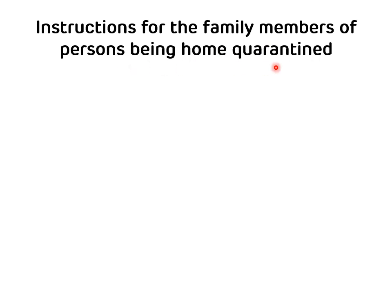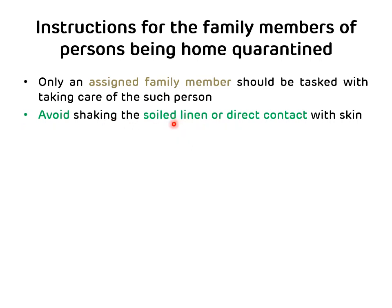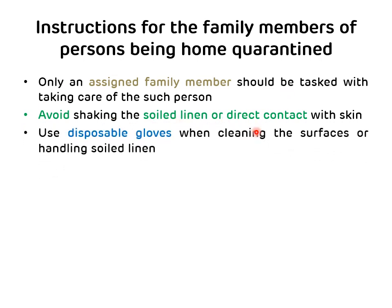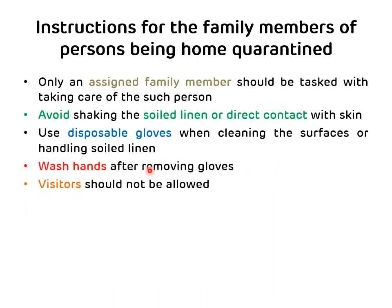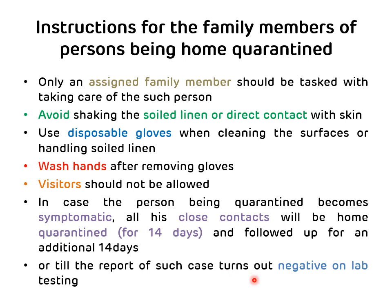Instructions for family members of a person being home quarantined: Only one assigned family member should be tasked with taking care of such a person. Avoid shaking soiled linen or direct contact with the skin. Use disposable gloves when cleaning surfaces or handling soiled linen, and wash your hands after removing gloves. Visitors should not be allowed. If the quarantined person becomes symptomatic, all close contacts will be home quarantined for 14 days and followed up for an additional 14 days, or until the lab report turns negative.